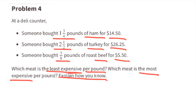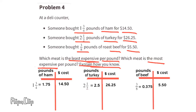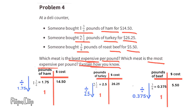Let's create charts with pounds of meat on the left and cost on the right. One and three-fourths is 1.75, two and a half is 2.5, and three-eighths is 0.375. To find the price per pound, we divide the pounds of meat by itself: 1.75 divided by 1.75 equals one pound, 2.5 divided by 2.5 equals one pound, and 0.375 divided by itself equals one pound. Now we do the same to the cost column.